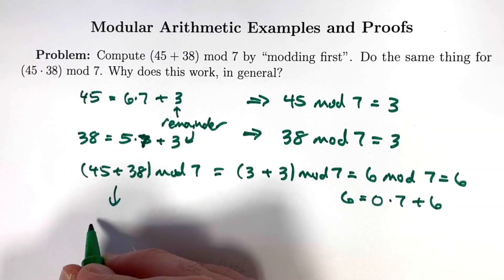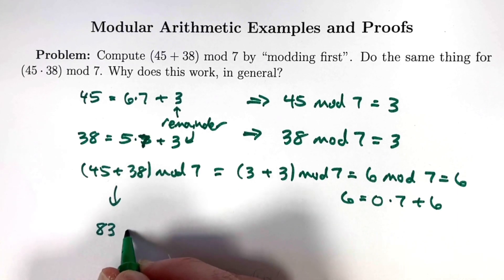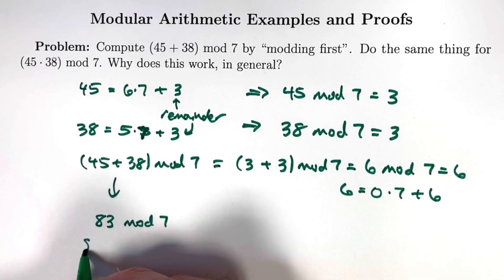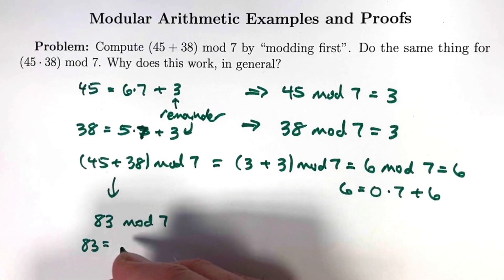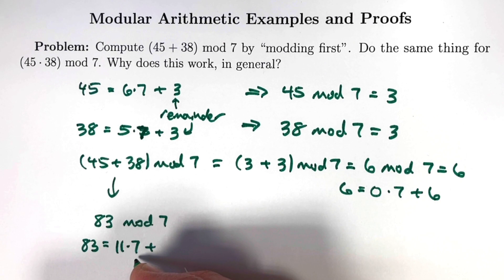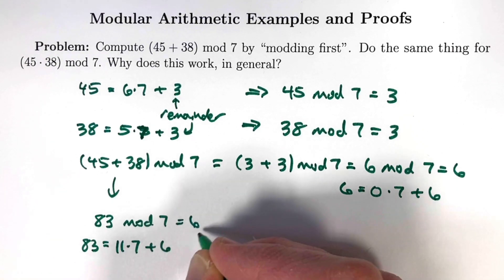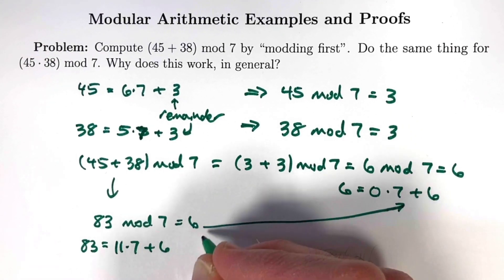What if we had done the regular addition first? 45 plus 38 equals 83. What is 83 mod 7? When I divide 83 by 7, I get a quotient of 11. 11 times 7 is 77, and a remainder of 6. The remainder that I get is 6. Therefore, this equals 6, and that is the exact same answer that I got before.